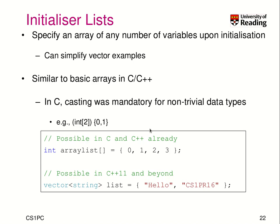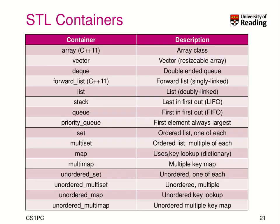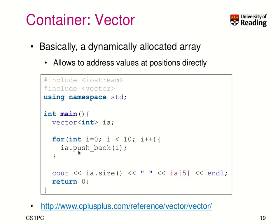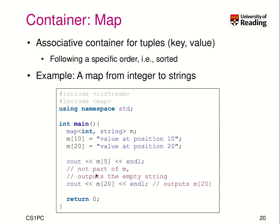InitializerList is a way to support you to specify a list of many potential inputs at construction time of such a template object. They are very similar to basic arrays in C and C++. In C and C++, you can say you have an array list where you don't know how many elements it has, but provide all the values to be stored on the right-hand side. That's much easier compared to pushing all these numbers in individually if you already know the inputs that should be stored in such a vector.